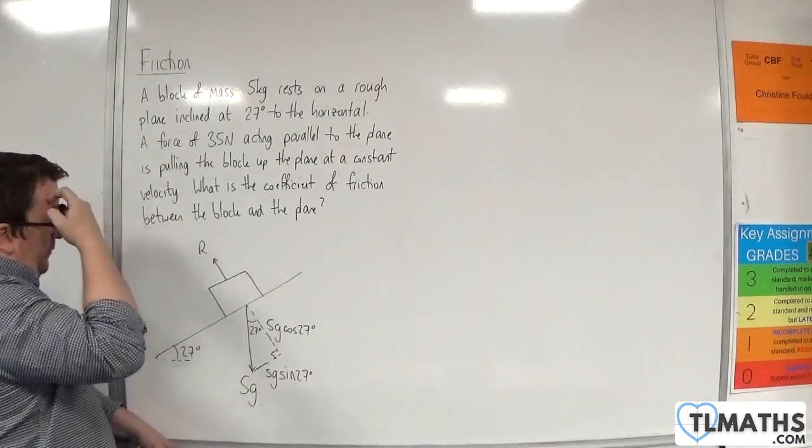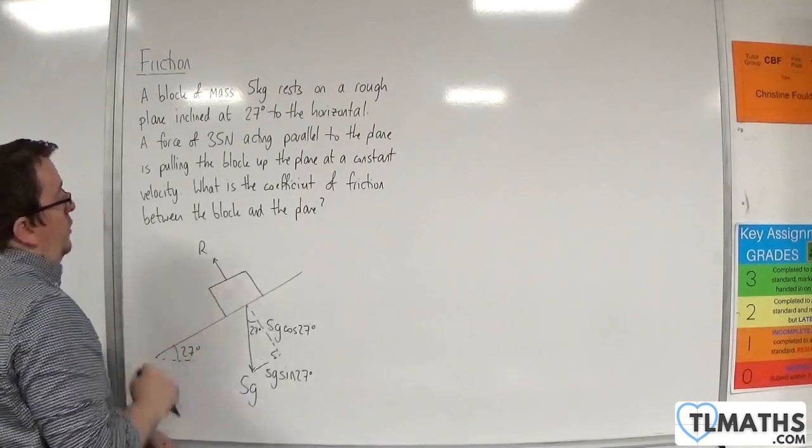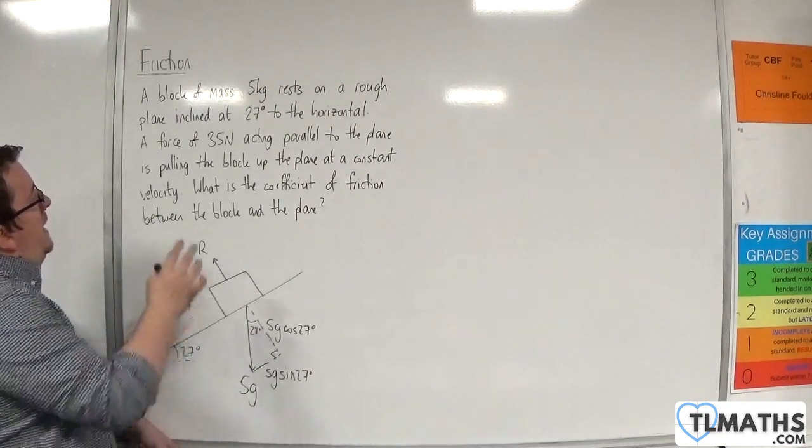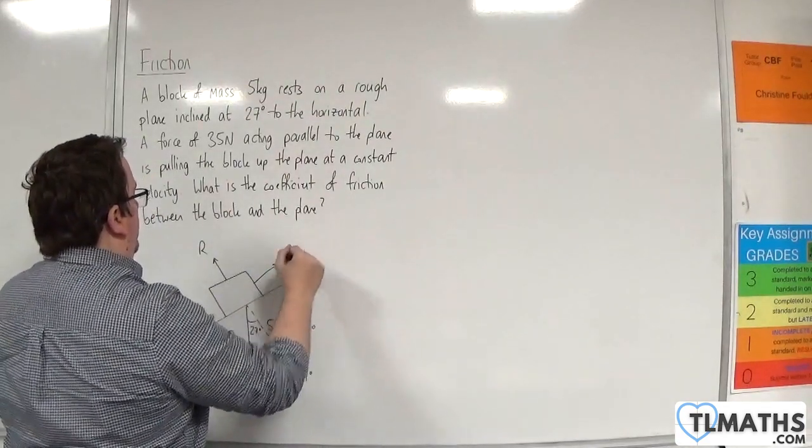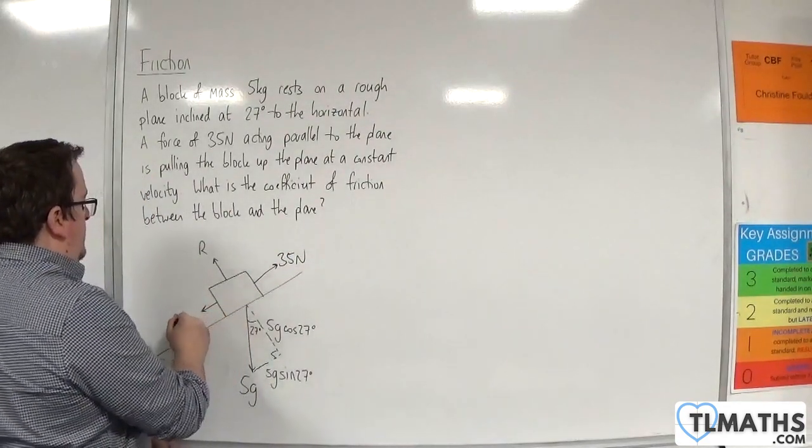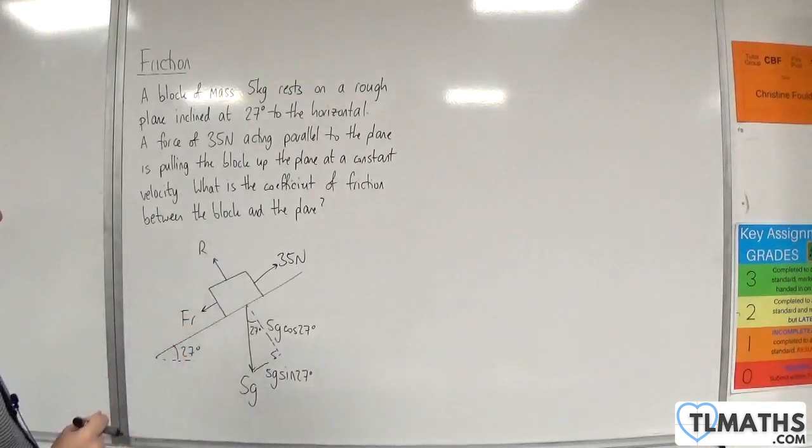We have a normal reaction force because it's in contact with the surface. And we have a 35 newton force acting parallel to the plane, pulling it up the plane. And we'll have friction going against the direction of motion.